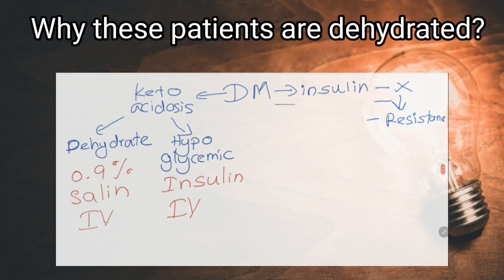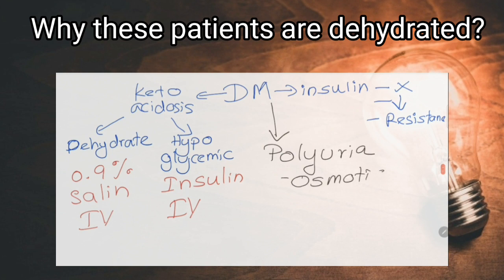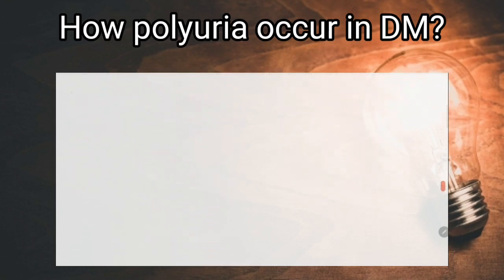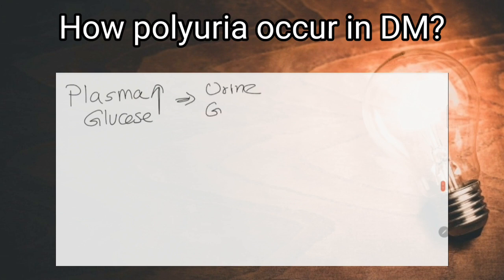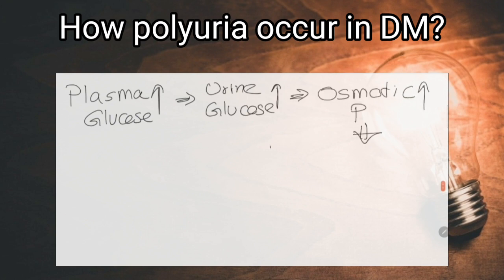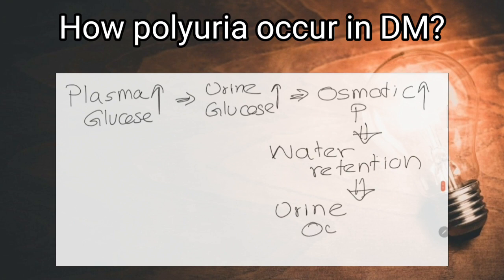Why are these patients dehydrated? Because they present with polyuria due to osmotic diuresis. How does polyuria occur in diabetes mellitus? In diabetes mellitus, plasma glucose level is increased; as it exceeds the renal threshold, it is present in urine. It increases the osmotic pressure in the renal tubules causing water retention, so urine output is increased. This is called osmotic diuresis.